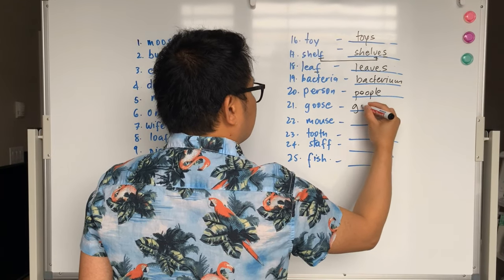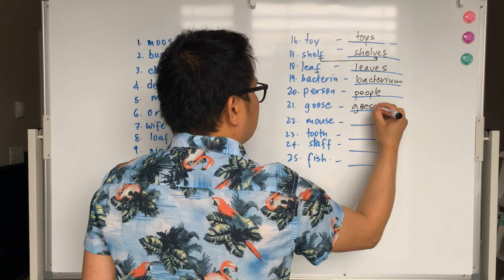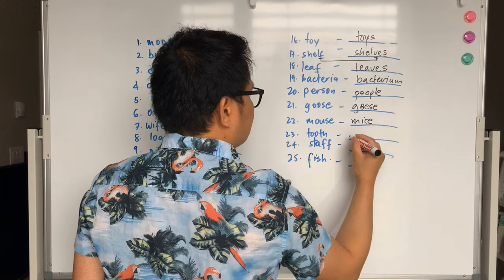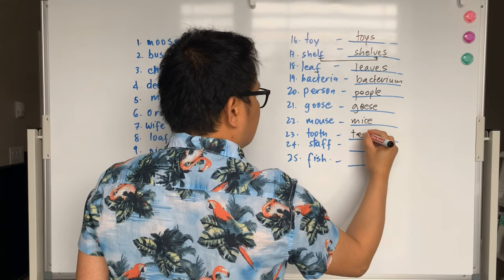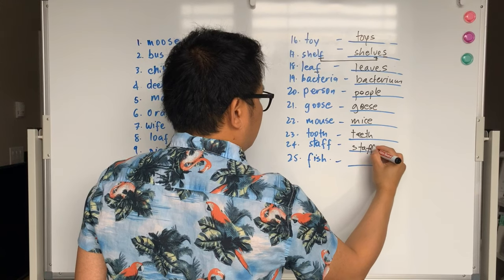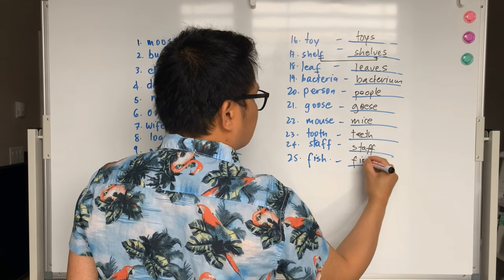Bacteria will become bacterium. Person will become people. Goose will become geese. Mouse is mice. Tooth becomes teeth. Staff, the same. Fish, also the same.